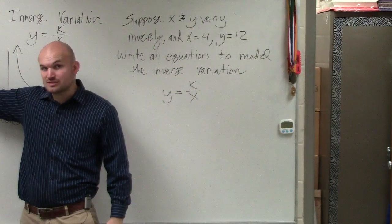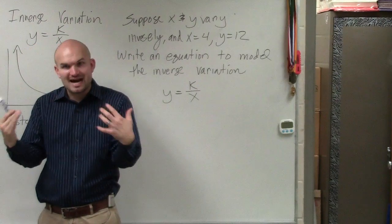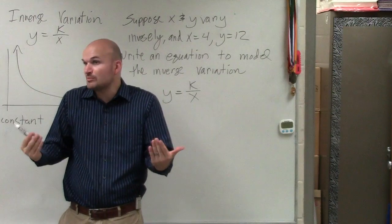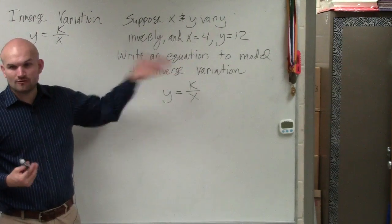Remember, think of like k in your constants of direct variation. That's like your slope, right? But it's your constant of change, correct? So for an inverse variation, k is a number as well. So if they're giving us x and y, can we solve for k?